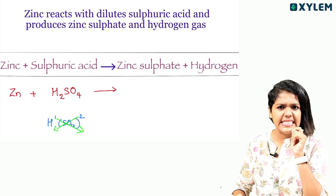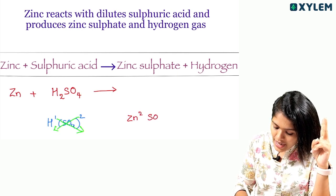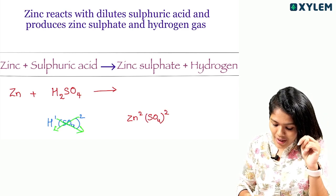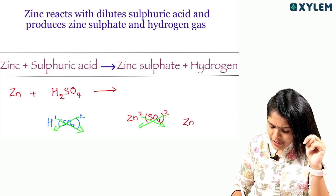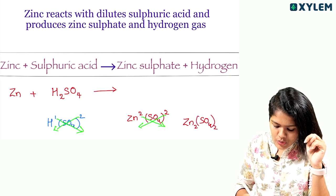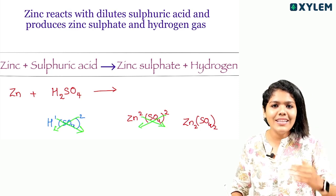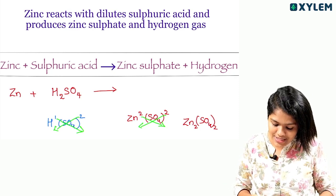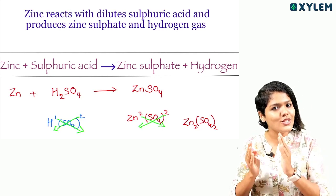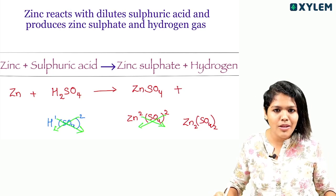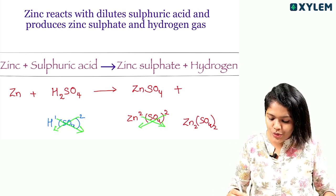The products are zinc sulfate and hydrogen gas. Zinc has valency 2, sulfate SO4 has valency 2. Using the cross method — Zn2(SO4)2 — we simplify using the common factor to get ZnSO4. Hydrogen is an element and a diatomic molecule, so we write H2. That is the skeletal chemical equation.